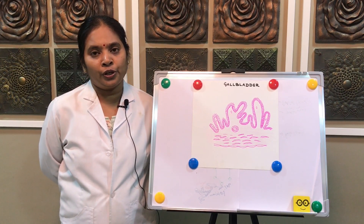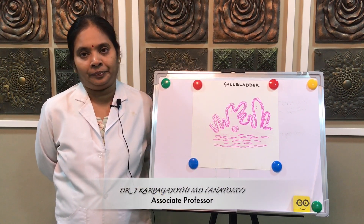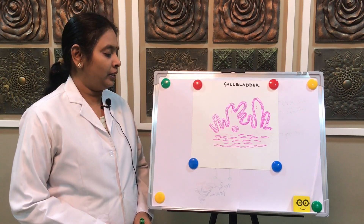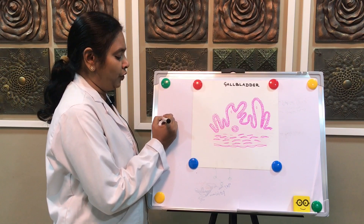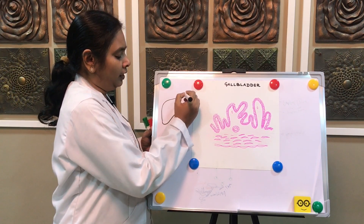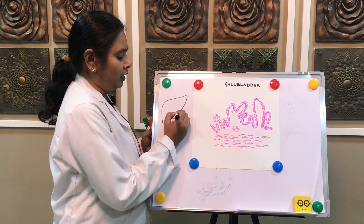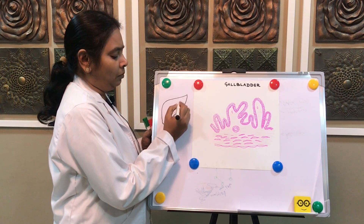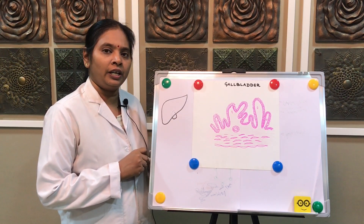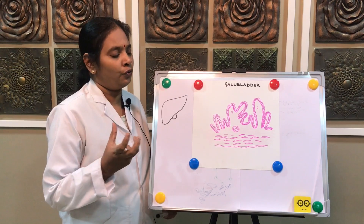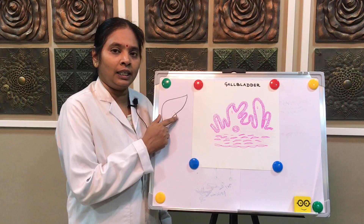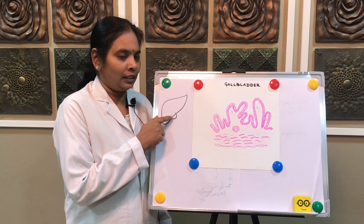Welcome students. Now we are going to see about the gallbladder — in Tamil, the 'pitta pini'. The gallbladder is situated on the under surface of the liver. Its main function is the storage of bile, which is secreted by the liver and stored in the gallbladder.